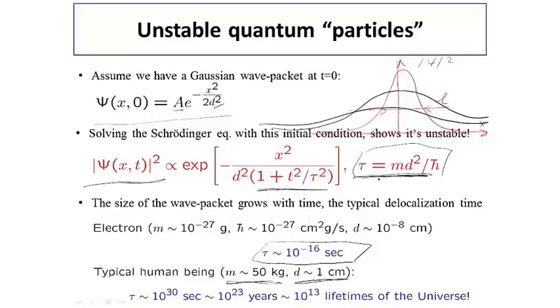Now, if we now plug in the numbers into this equation, what we're going to see is that the typical time scale at which quantum delocalization of a human being occurs is of order 10 to plus 30 seconds. So to put this number in perspective, so this is equal to 10 to the 23 years, or 10 to the 13, 10 trillion lifetimes of the universe. So basically, it's in some sense a meaningless number. It's a number which is never relevant in any realistic circumstances. So we shouldn't be worrying too much about being quantum delocalized due to quantum mechanical effects.